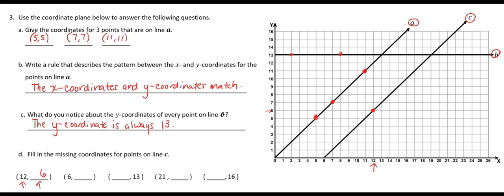For the next point, I'm going to go over to the 6 and go up to where line C intersects, and it's right on that 6. So we didn't move any units, so that coordinate would be 0.